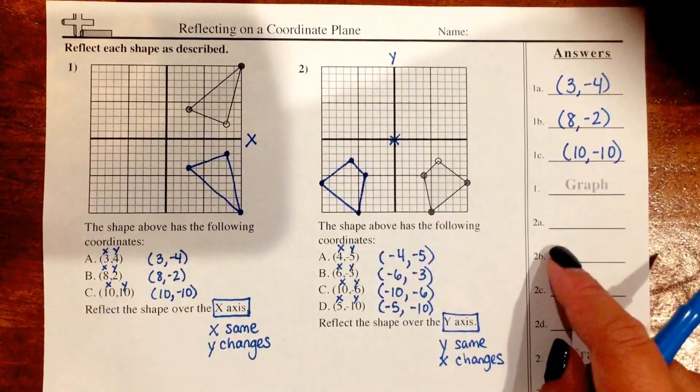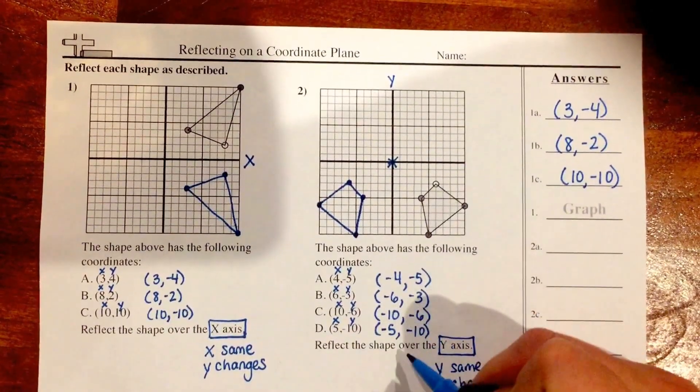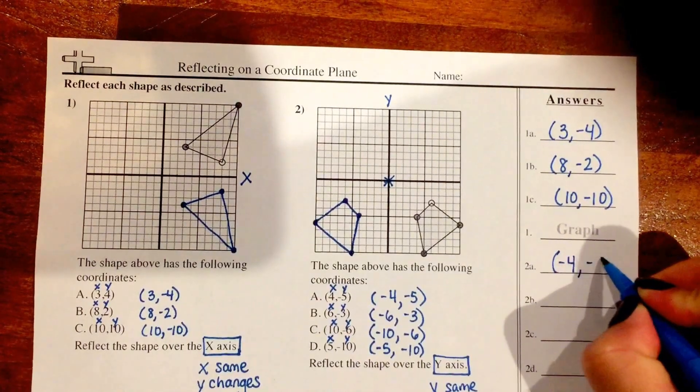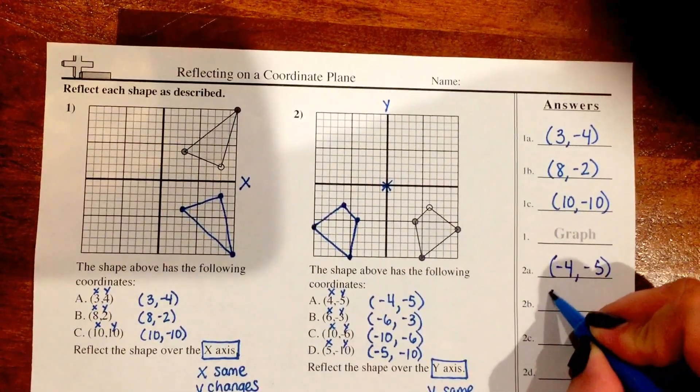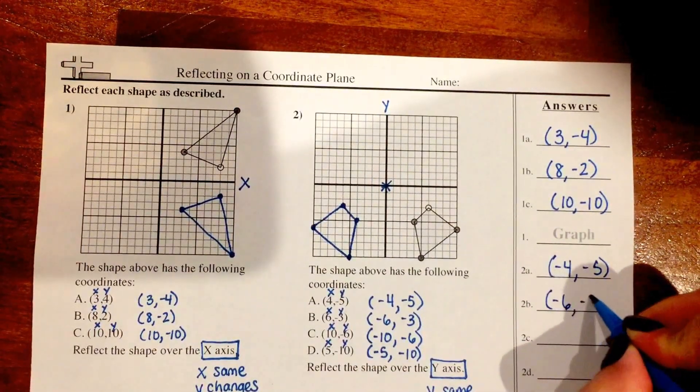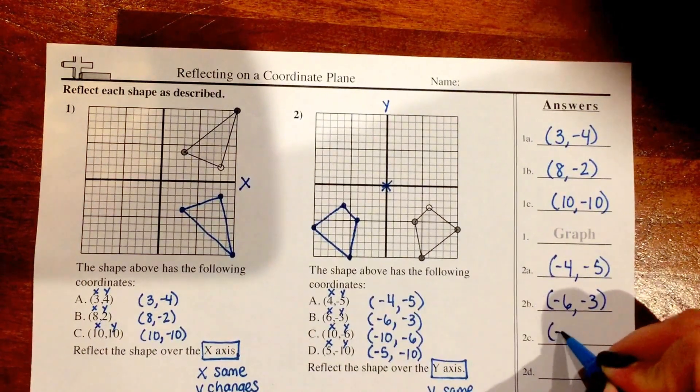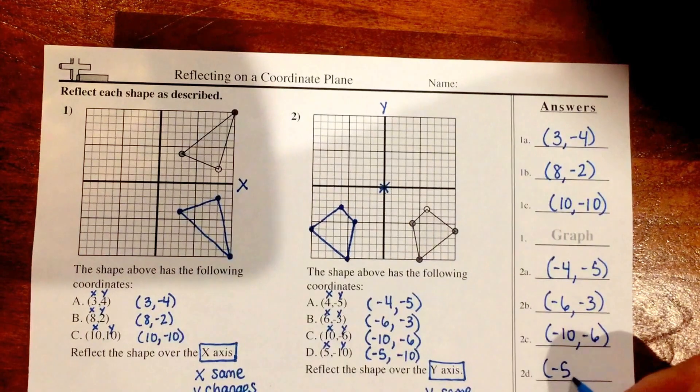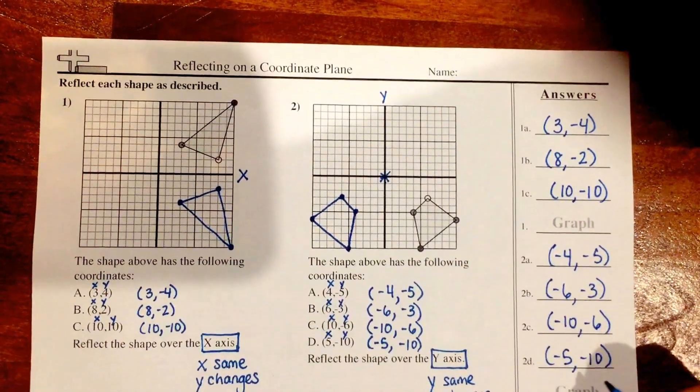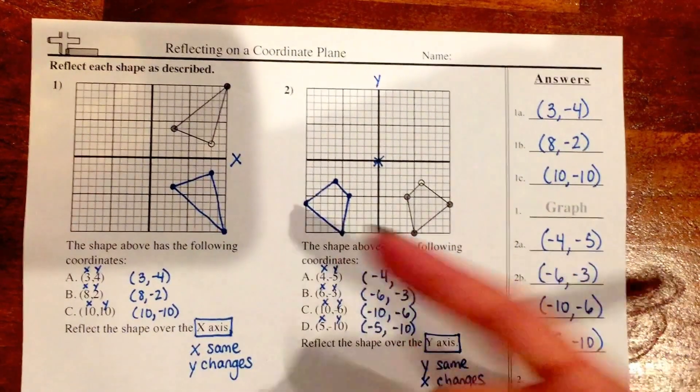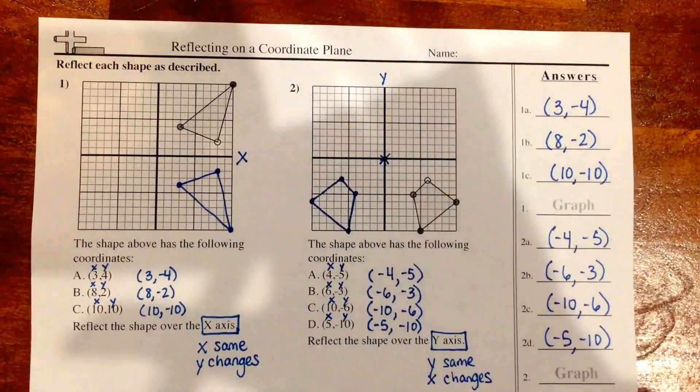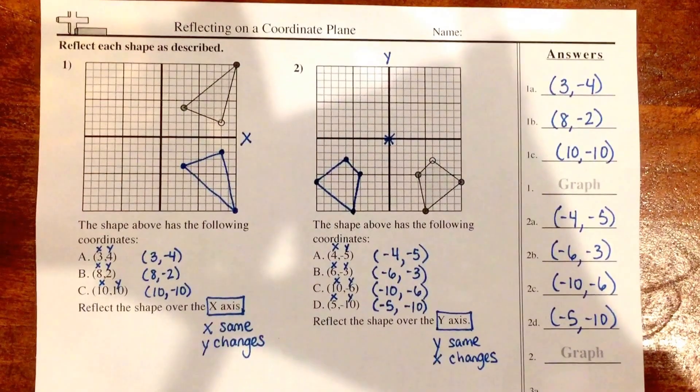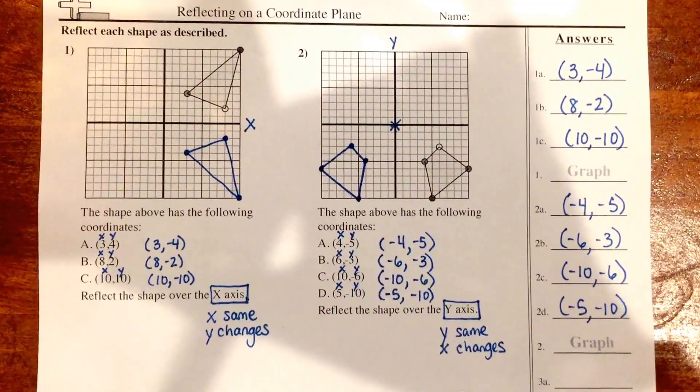So then again over here for your answers, I'm just going to list my new points after flipping them: (-4, -5), (-6, -3), (-10, -6), and (-5, -10). And again number 2 says graph, which I've already done. So in this video we reflected points over an axis, both x and y-axis, on a coordinate plane.